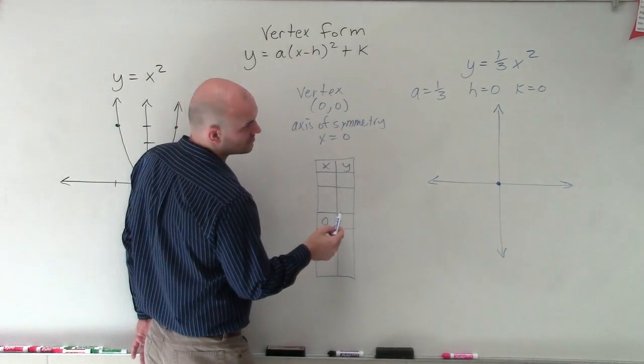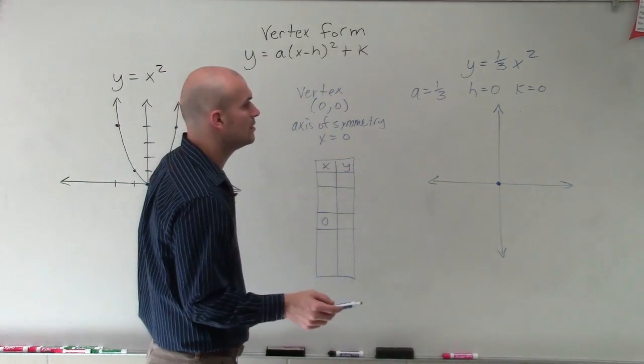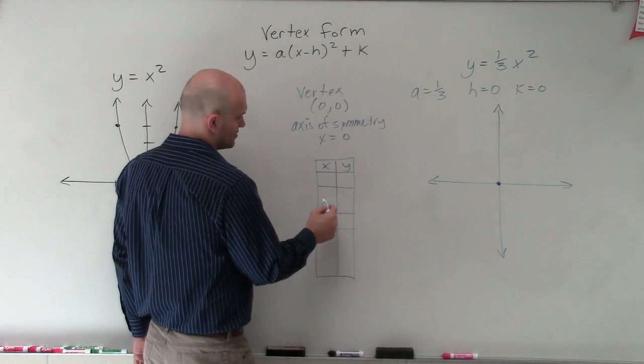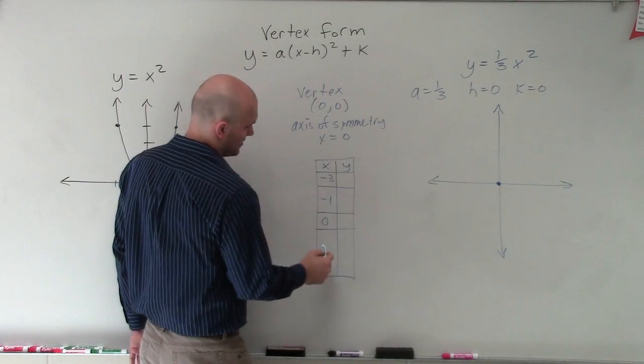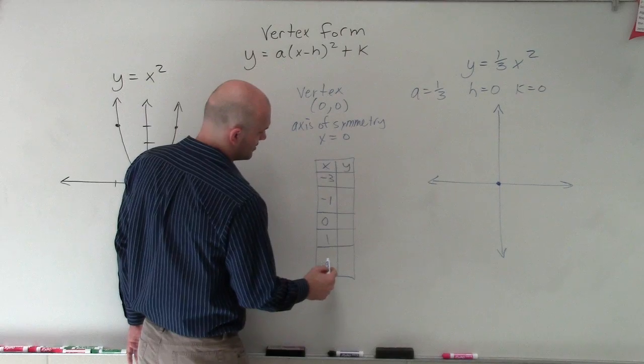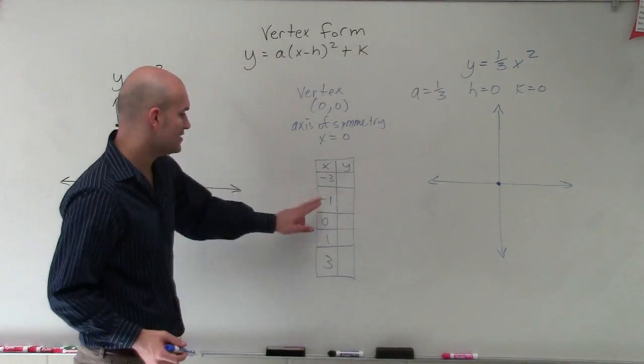So let's pick, let's do, we can just do negative 1 and negative 3. And then over here, I'll pick positive 1 and positive 3.